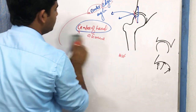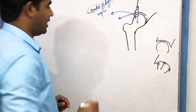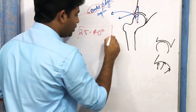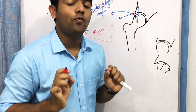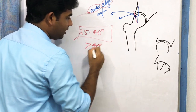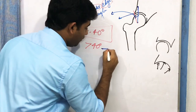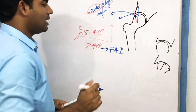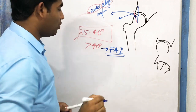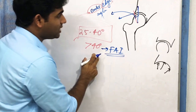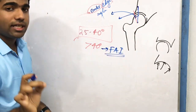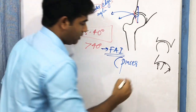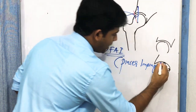The normal value of the center edge angle is 25 to 40 degrees. If it is greater than 40 degrees, it shows a clinical condition known as femoro-acetabular impingement — specifically pincer impingement. There are three types of impingement: pincer impingement, cam impingement, and combined impingement. A center edge angle greater than 40 degrees denotes pincer impingement.